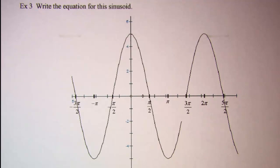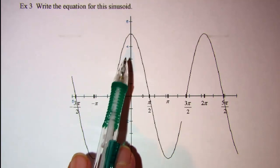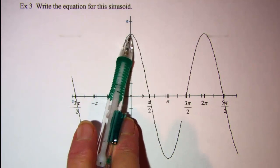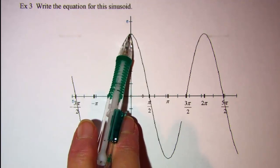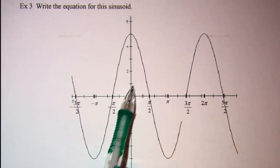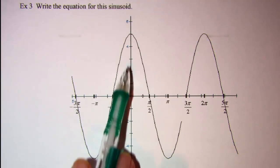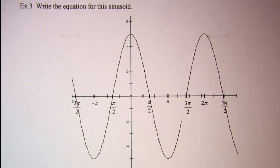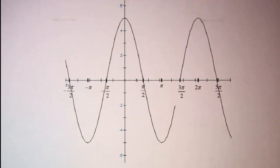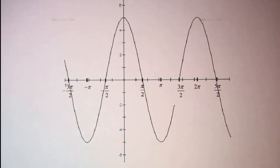All we've done is change the amplitude. Now we know that a usual cosine curve starts when the angle is 0 at 1, but if our maximum is 5 that means our a value for the equation is going to be 5. Our equation then should be y equals 5 cosine x.